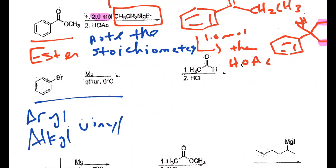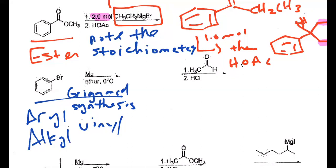So this is actually a Grignard formation — magnesium metal and an aryl halide at low temperature in an aprotic solvent. The product is the ring with MgBr — magnesium and then bromide — just like that.